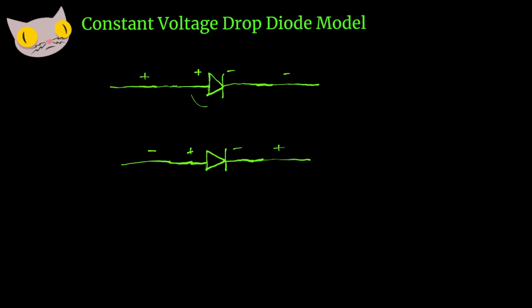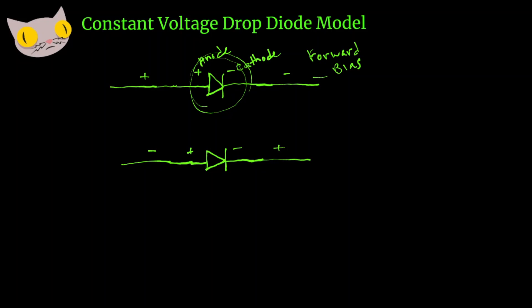Here's a diode — this is what you're going to see in any schematic you're looking at. You have your positive side, that's your anode, and your negative side, that's your cathode. This first one is a forward bias diode, because we have a positive wire connected to the positive side of the diode and your negative side connected to the negative lead. This forward bias configuration allows current to flow through the diode.